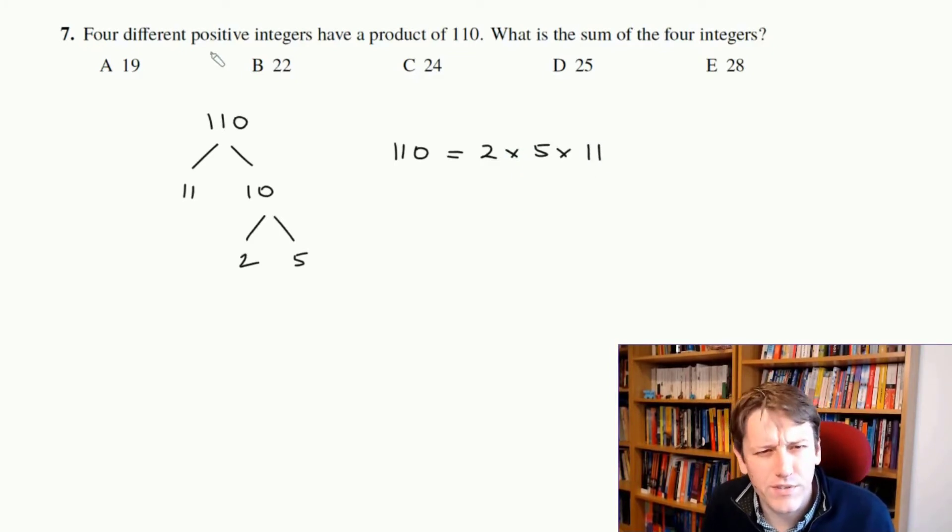Now it says that it's four different positive integers that have this product. But there's only three possible factors here, and if I start combining them, like 2 times 55, I'm going to have even less. So the other number we have to remember we can add in here is 1. So I could also write this as 110 is 1 times 2 times 5 times 11.